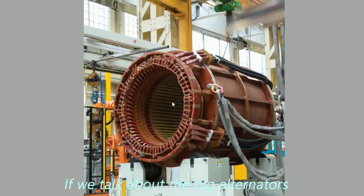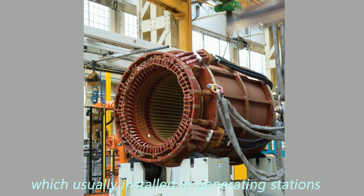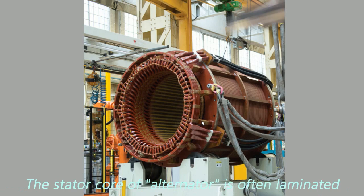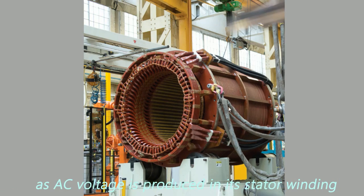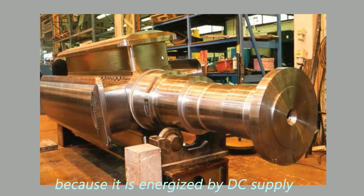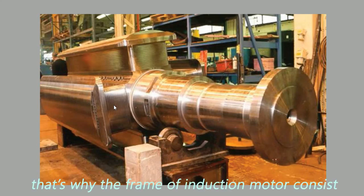If we talk about the big alternators, which usually installed in generating stations, where the rating of power voltage and current is very high, the stator core of alternator is often laminated, as AC voltage is produced in its stator winding. Whereas the rotor consists of solid core, because it is energized by DC supply to produce fixed pole.